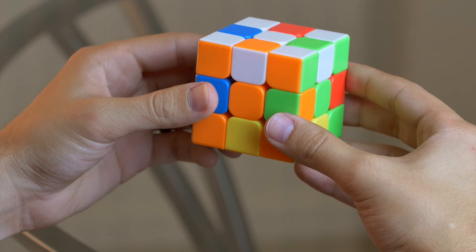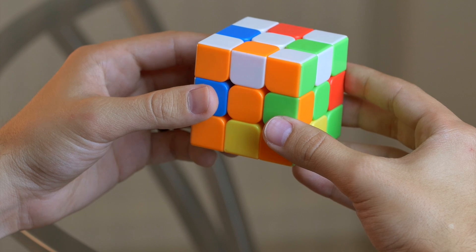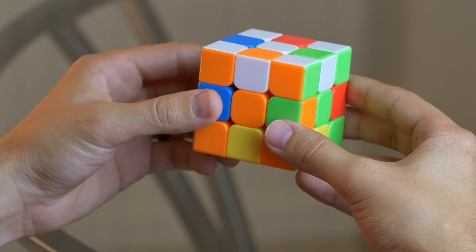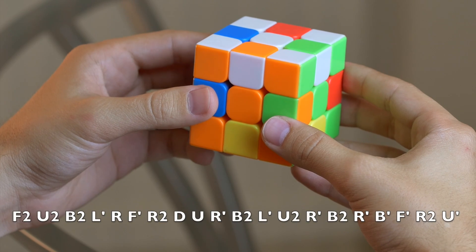To get the super flip design back to its solved 3x3 status, we need to do everything that we've already done except do it backwards. And I'll put the algorithm on the screen for you right now.